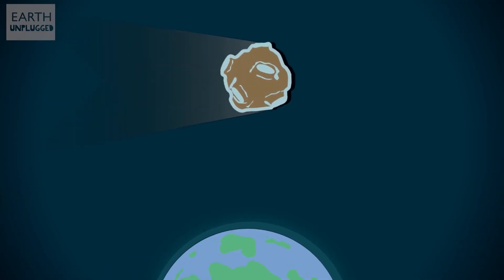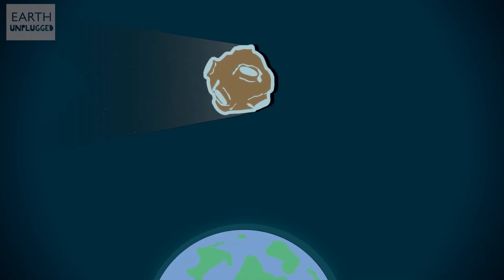A comet originates from the outer solar systems where it's very cold, so it's made up of ice, dust and rocky materials. The heat from the sun causes the ice to vaporize, and that's what creates the comet's tail.